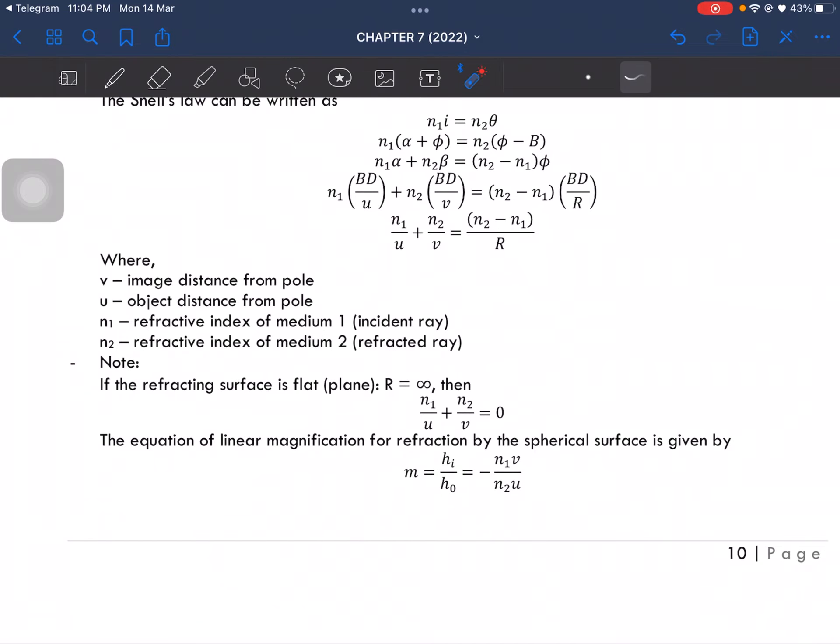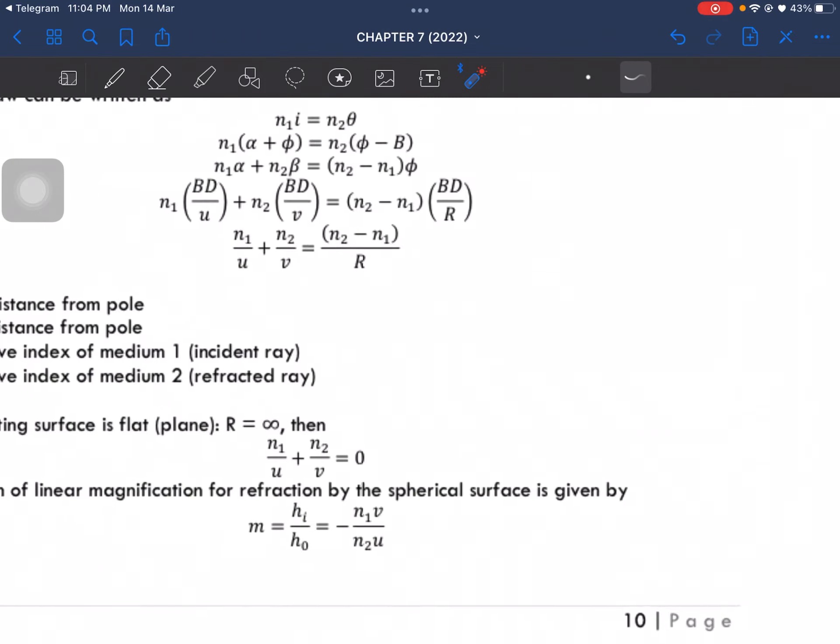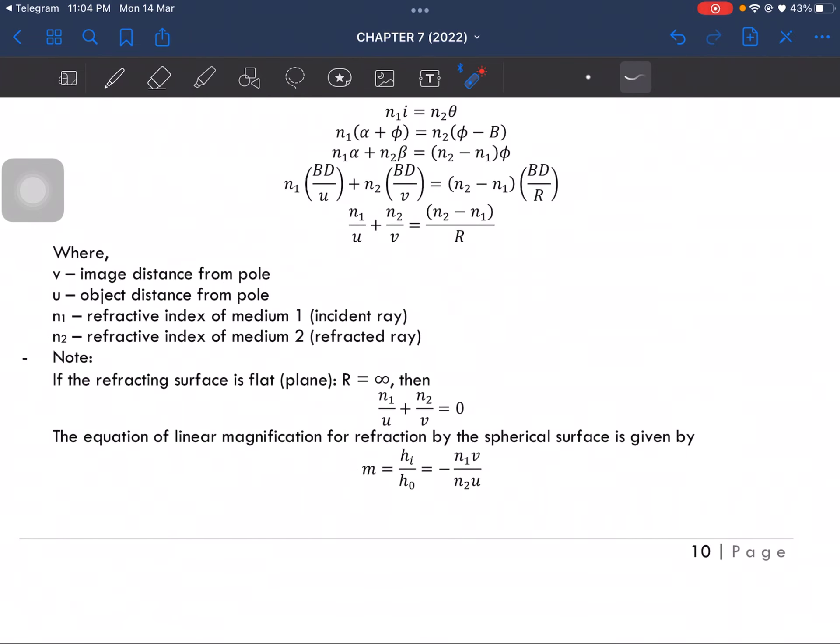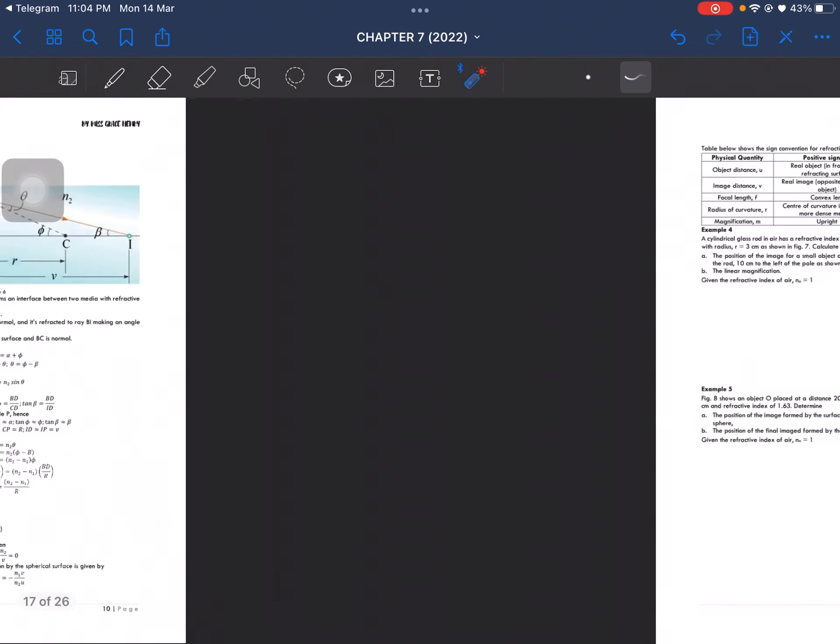If the refracting surface is flat, or what we call plane, the radius of curvature will be at infinity. Then we can let the right-hand side of this equation equal zero. The equation of linear magnification for refraction is given by this equation here. It is different because it includes the refractive index.